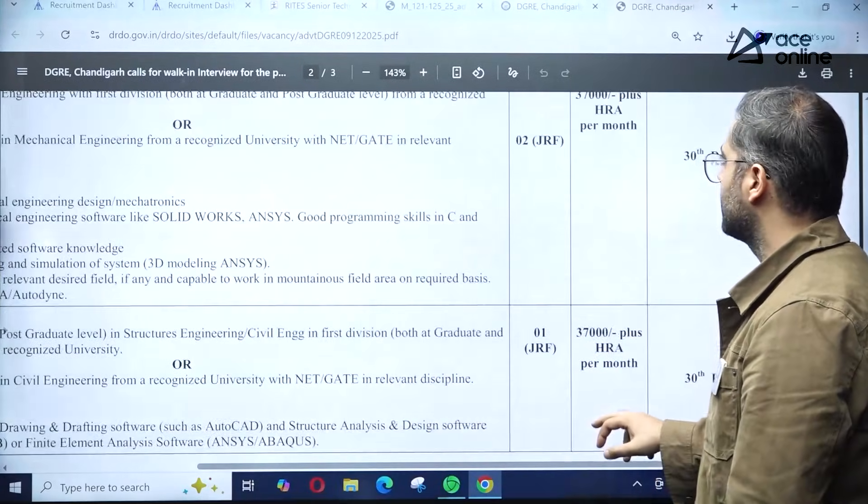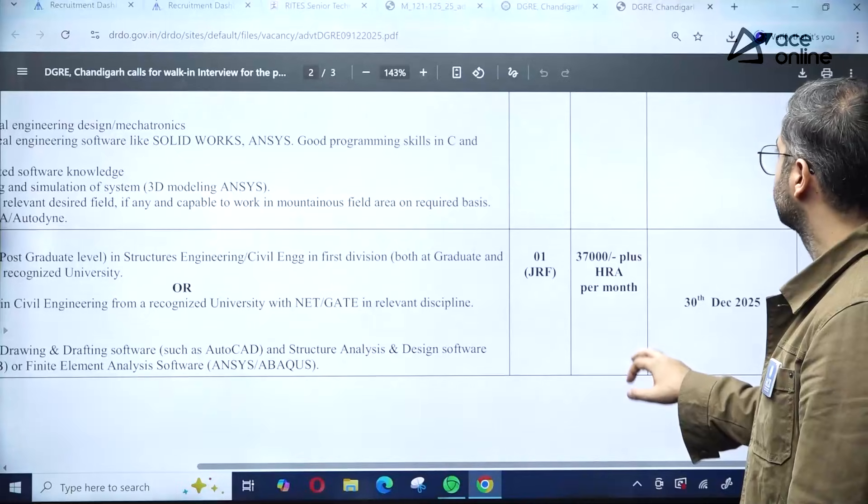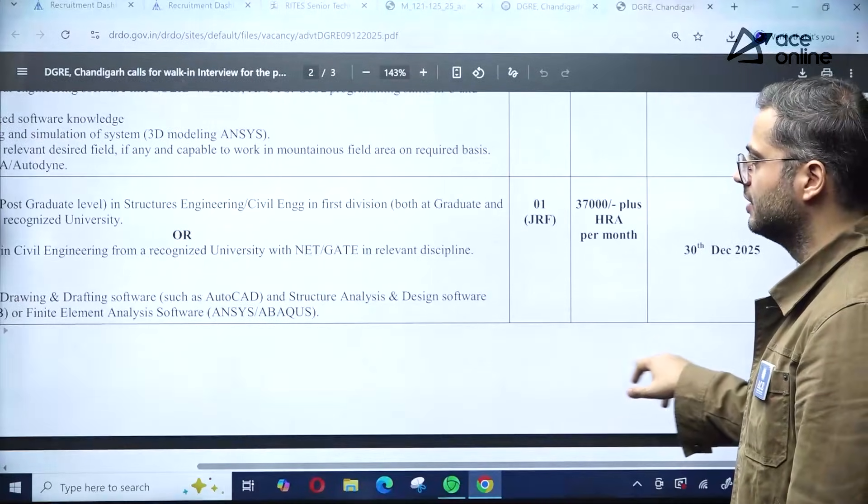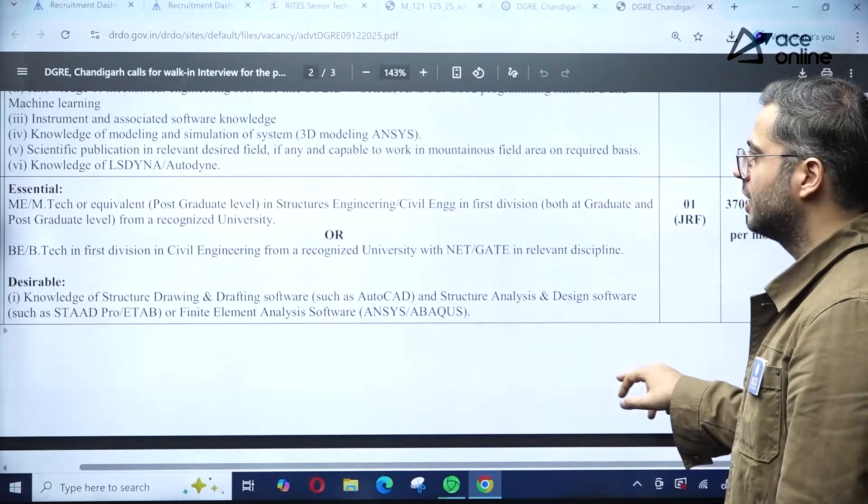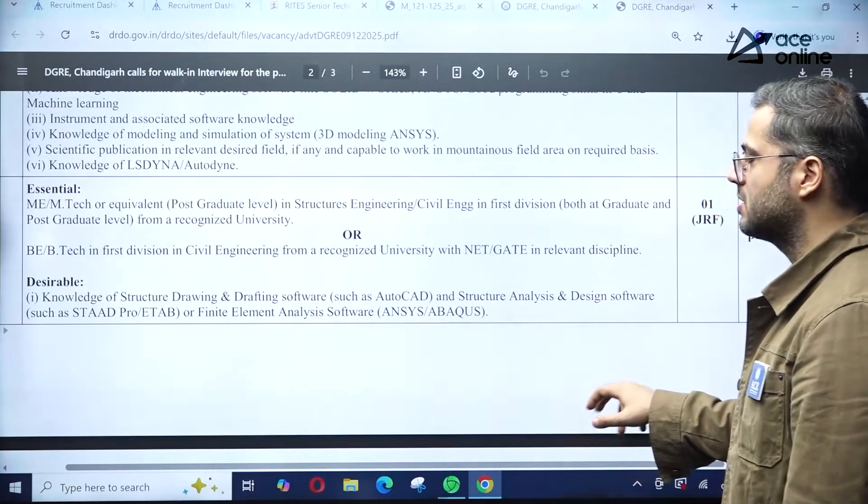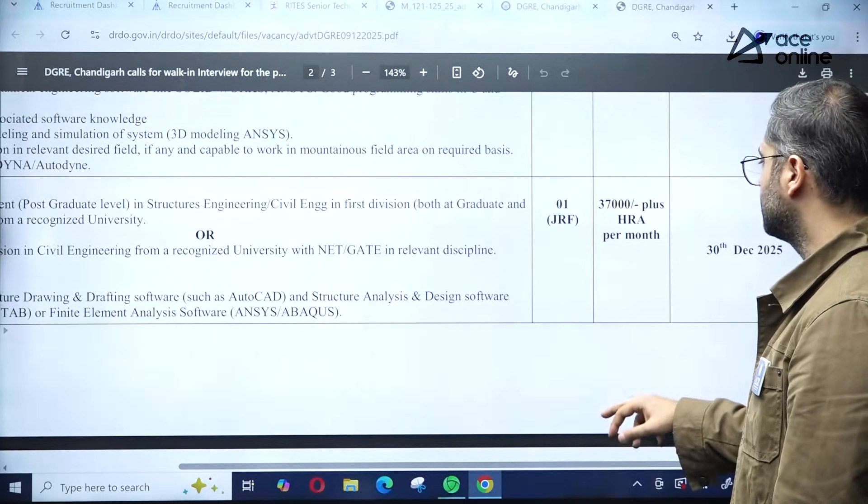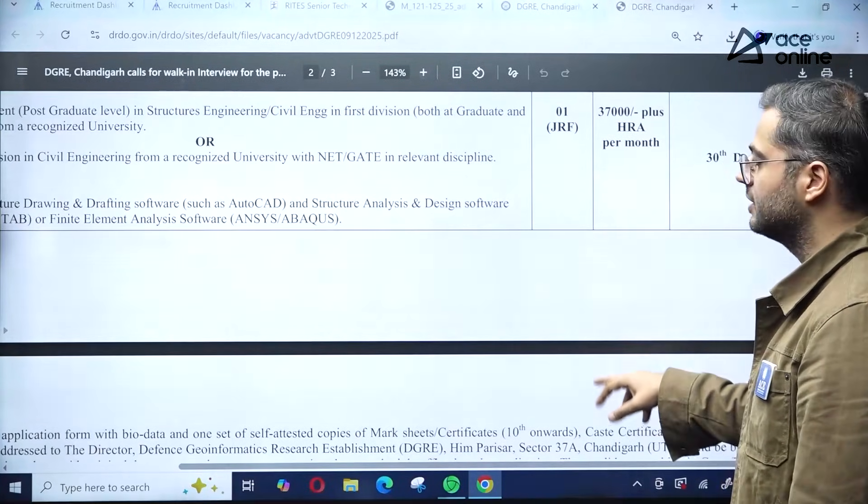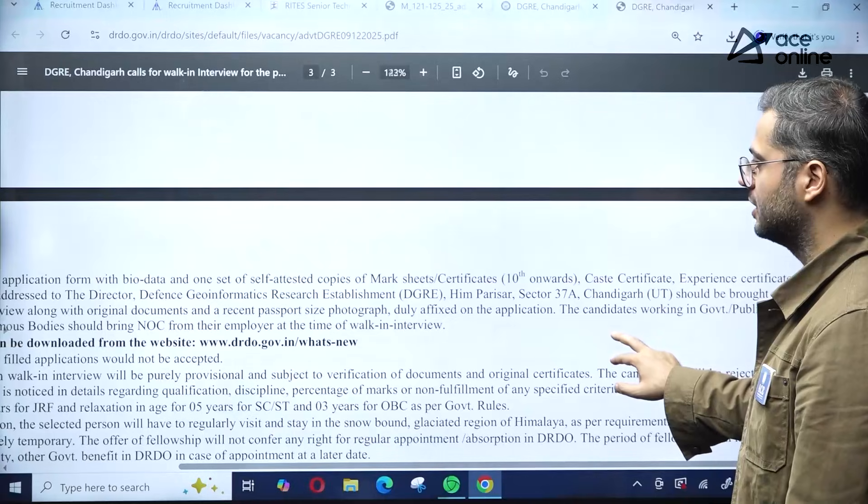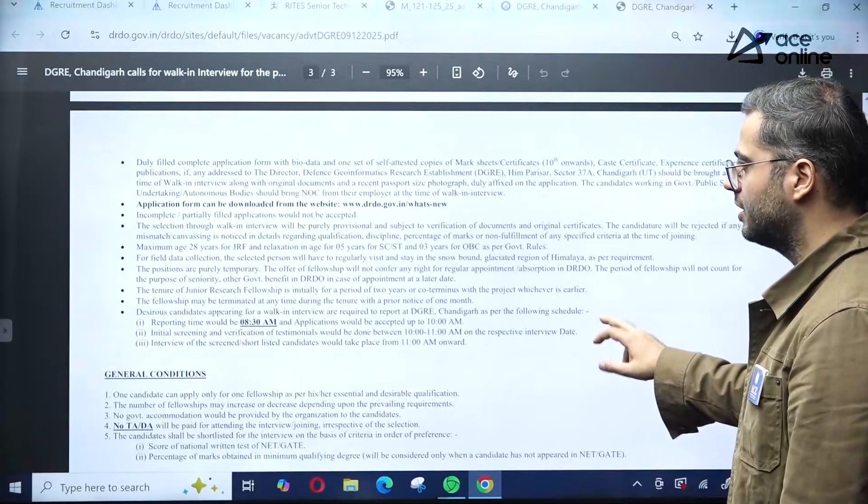Civil Engineering or Structural Engineering: M.Tech or B.Tech in Civil Engineering with a GATE scorecard. One JRF position at 37,000 plus HRA, with interview on 30th December.